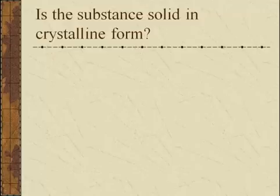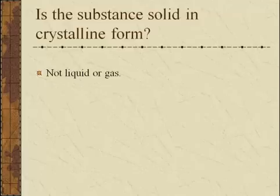Is the substance solid in crystalline form is our next question. The first part is pretty straightforward — the object cannot be a liquid or a gas. Water is an interesting example here. Water in its liquid form, or in the gas form of water vapor, will not be considered a mineral. Ice, as a solid form of water, may be considered a mineral.